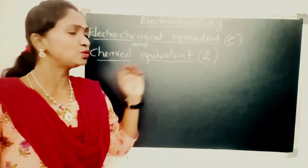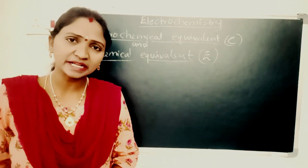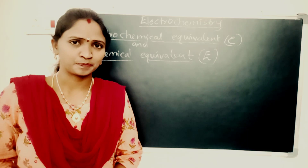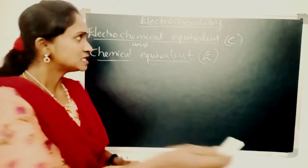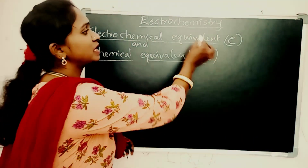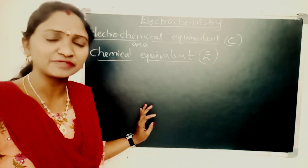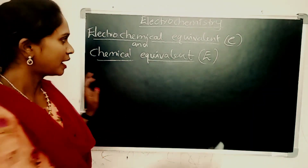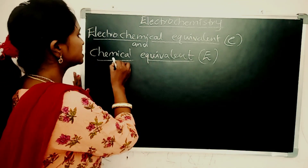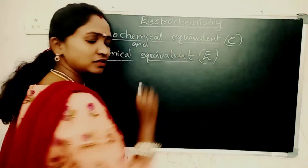So these two terms are based on Faraday's laws of electrolysis. We can see small e, that is electrochemical equivalent, in Faraday's first law, and capital E, that is chemical equivalent, in Faraday's second law.